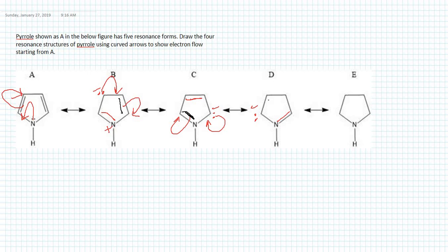For the last structure, again we use a lone pair as a double bond here, this one has to be a lone pair. This bond should stay originally as a pi bond. Don't forget that these nitrogens should be positively charged.